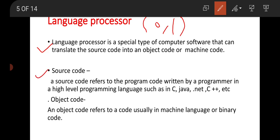The language translator is software which converts source code into object code. Source code refers to the program code written by a programmer in a high-level programming language such as C, Java, .NET, C++, or Python. For example, writing statements like 'a = 5' or 'print c' in Python — these are high-level language statements. The language processor converts them into machine-level language, that is, binary code. An object code refers to code usually in machine language or binary code.